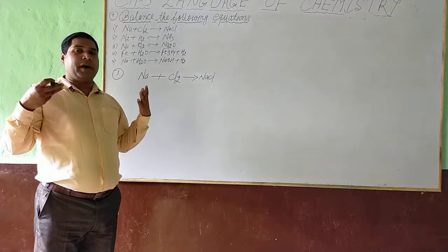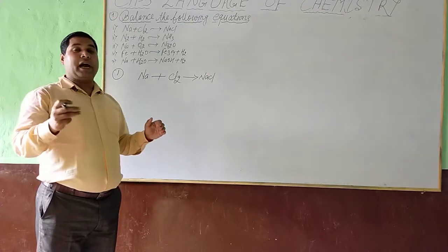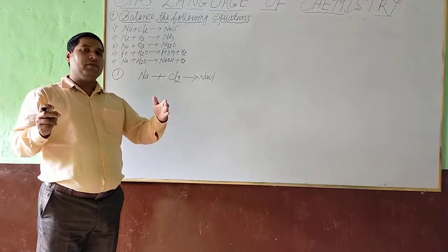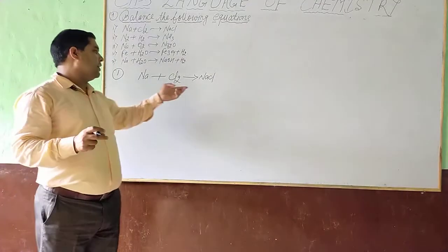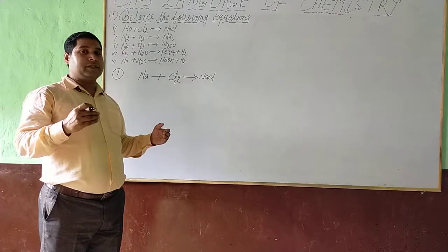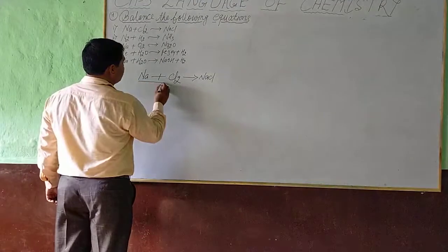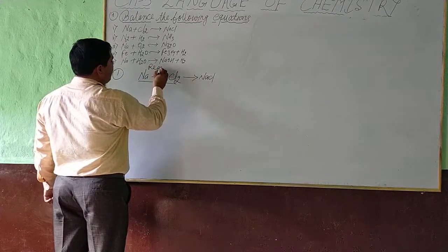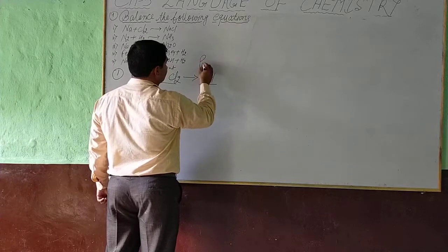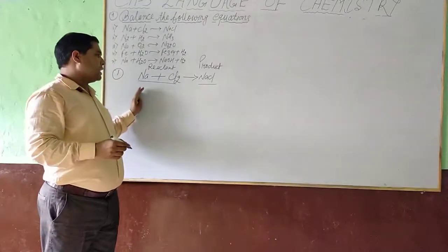We also have to know what we mean by reactant. Reactant can be defined as those substances which undergo chemical change. Those substances which undergo a chemical change are known as reactants, and those substances found as a result of the chemical reaction — that means those substances which are produced in the chemical reaction — are known as products. So our chemical equation has two parts: the first part is known as reactant and the second part is known as product.